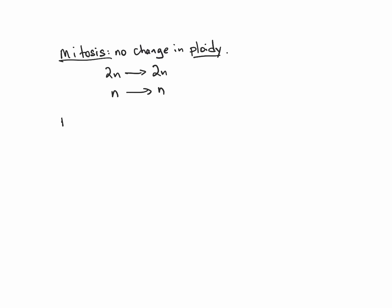Meiosis, on the other hand, has a reduction in ploidy. In this example we're going from a diploid cell to a haploid cell. You're most familiar with this because it's how gametes are produced in animals. But remember that plants always produce their gametes by mitosis — that's an important difference to wrap your head around.